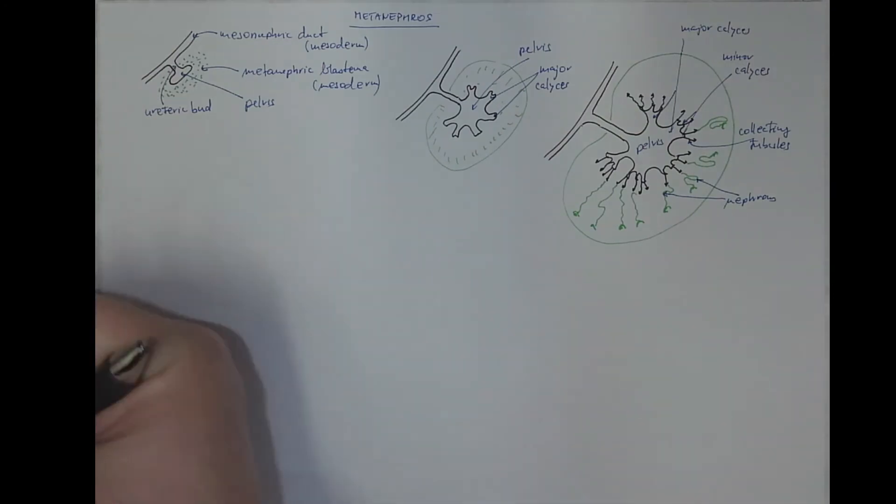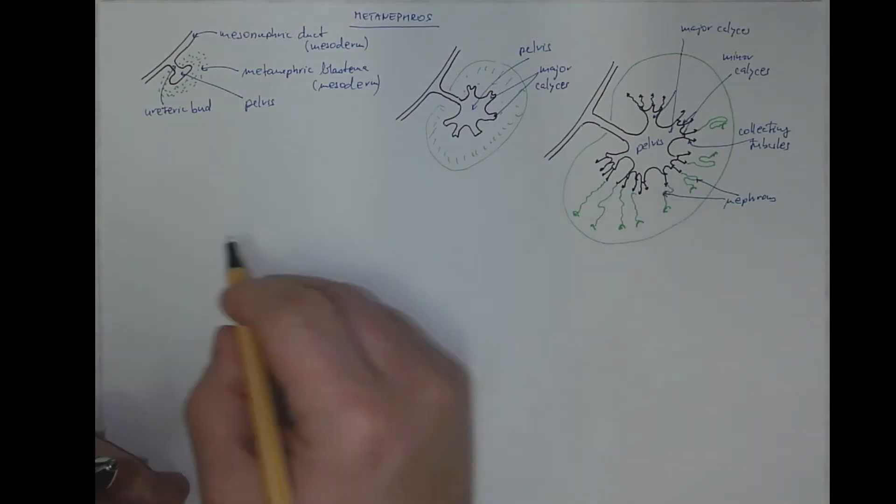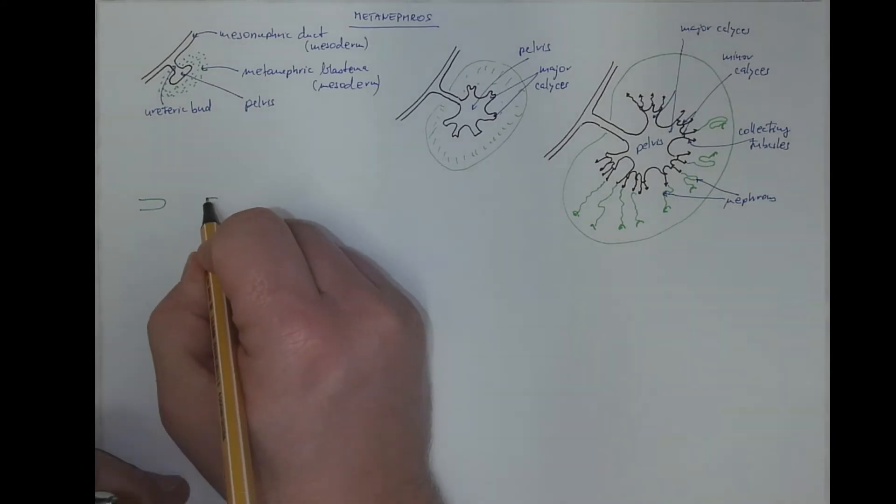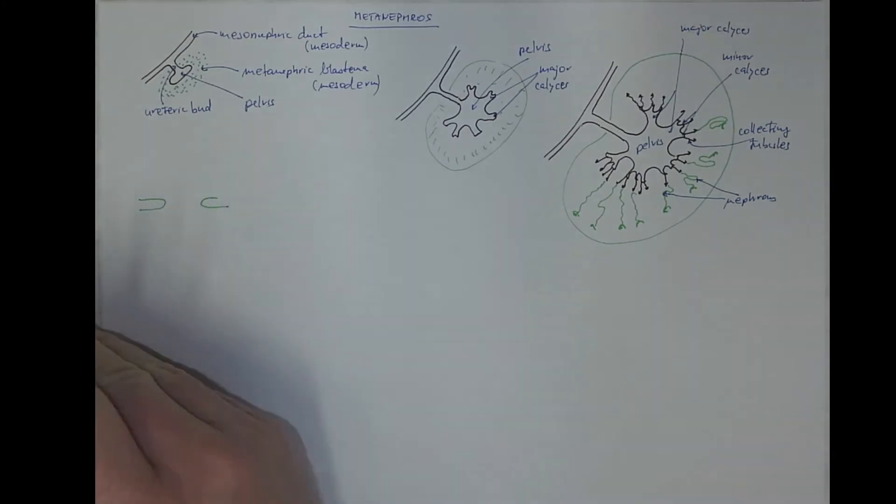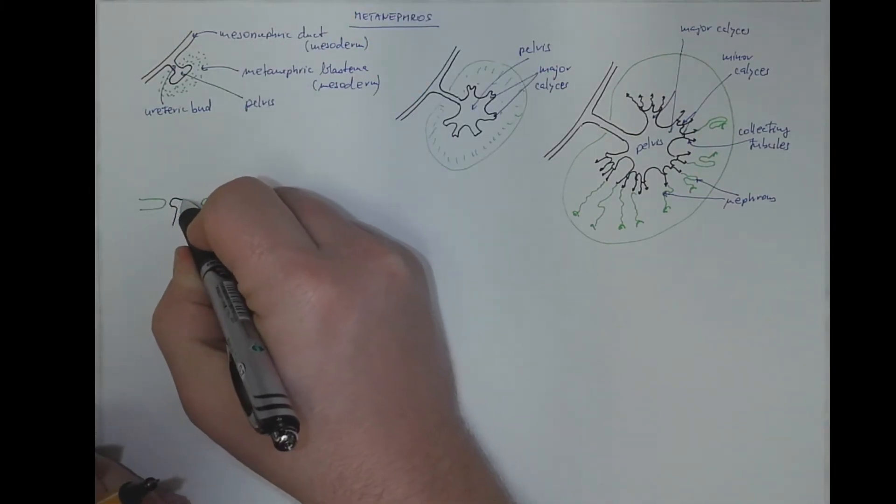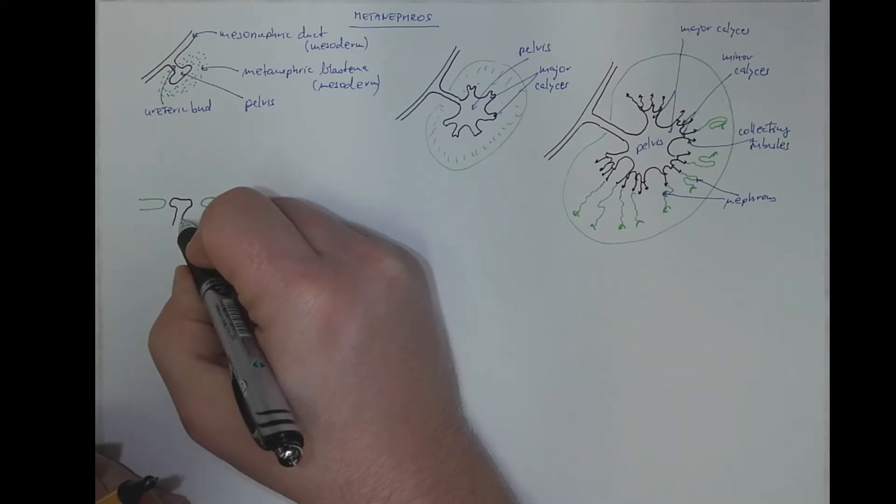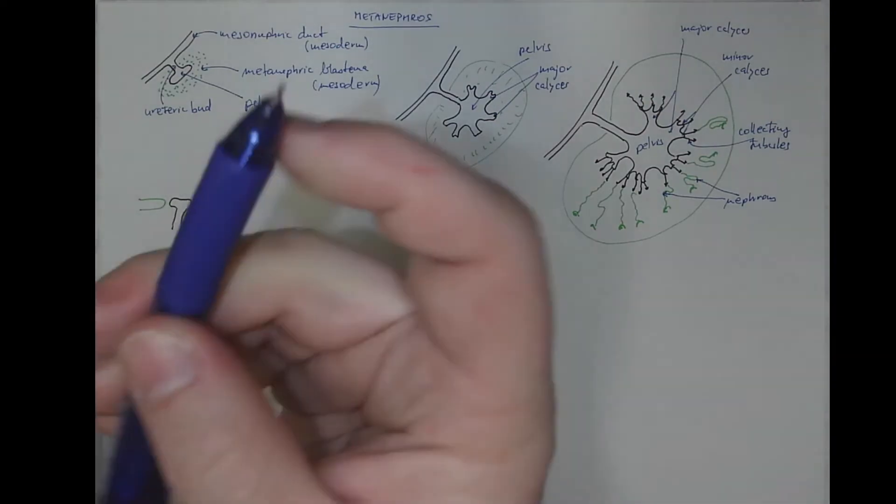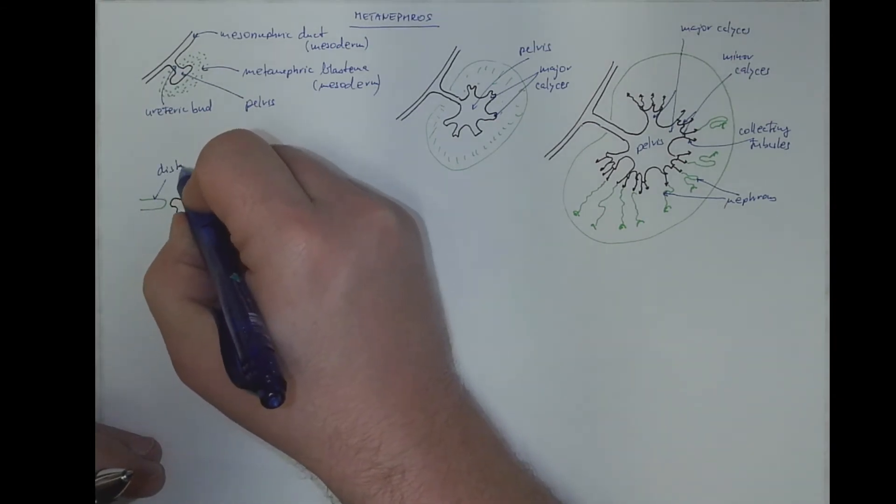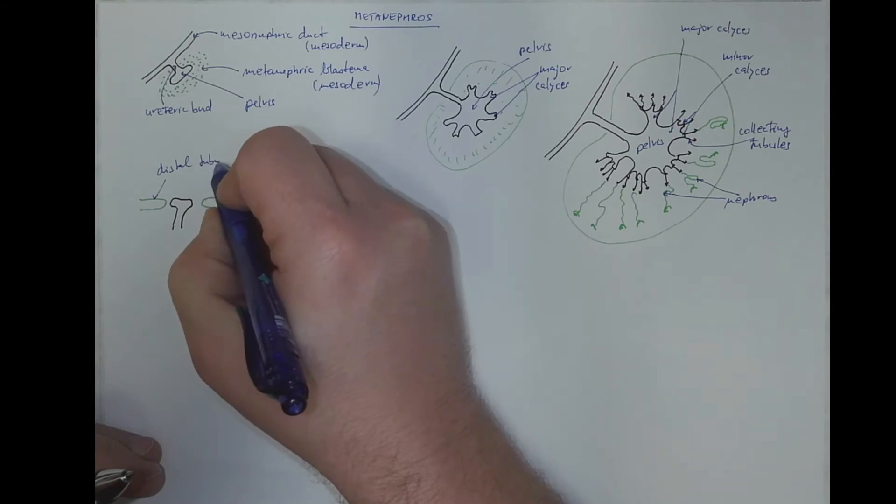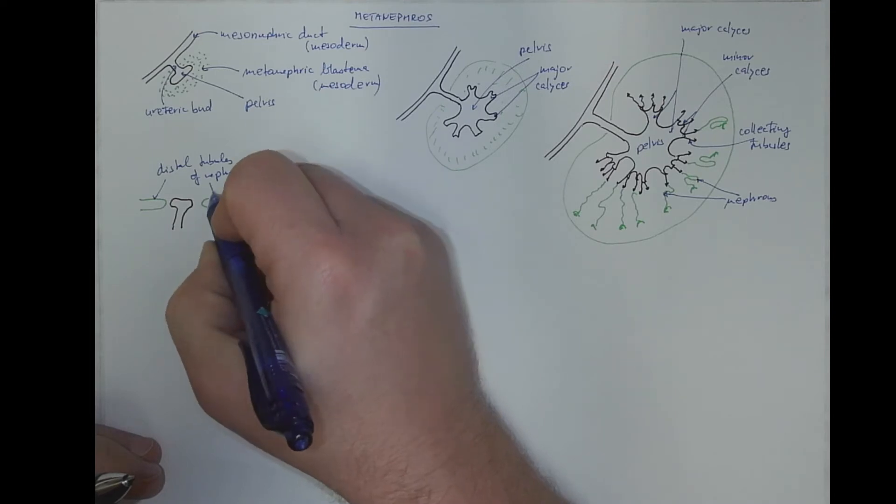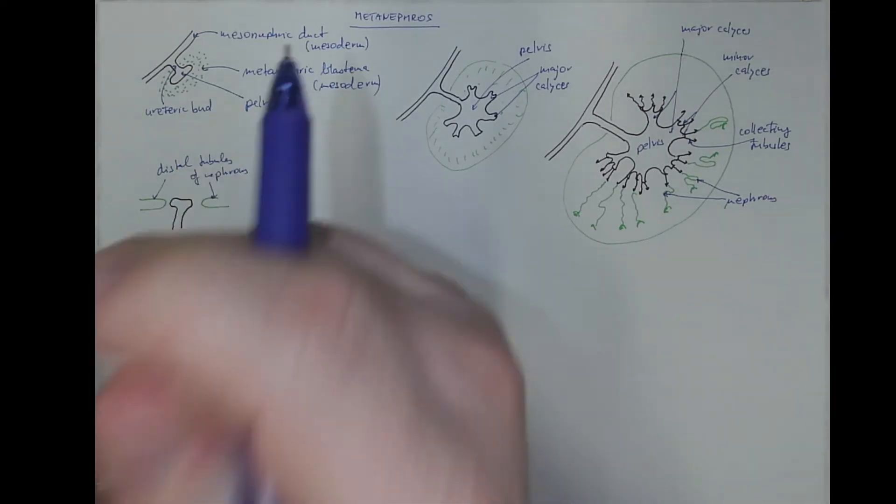On a microscopic level, we will see how these tubules will meet. So here, at first, there will be blindly ending distal tubules of the nephron, coming close to the collecting tubule.